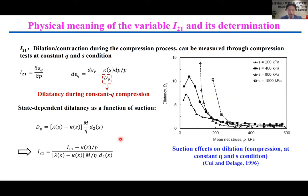I2-1 is the ratio of incremental deviatoric strain to incremental mean net stress when q and s are constant. The incremental deviatoric strain can be calculated using the equation shown here. The dilatancy number dp during constant p tests of an unsaturated soil has been studied through compression tests. Once dp is measured, I2-1 can be calculated from the equation shown here.